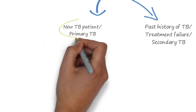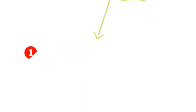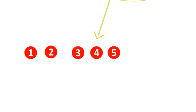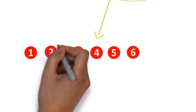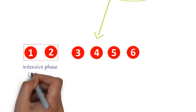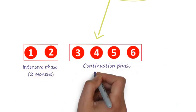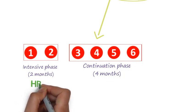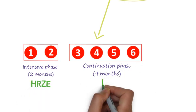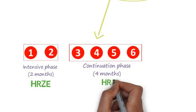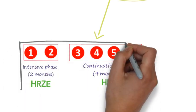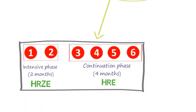For a newly infected or primary tuberculosis patient, drugs are given and monitored over six months continuously. The first two months are called the intensive phase and the following four months are called the continuation phase. In the intensive phase, drugs HRZE are given — that means isoniazid, rifampicin, pyrazinamide, and ethambutol. In the continuation phase, HRE are given.